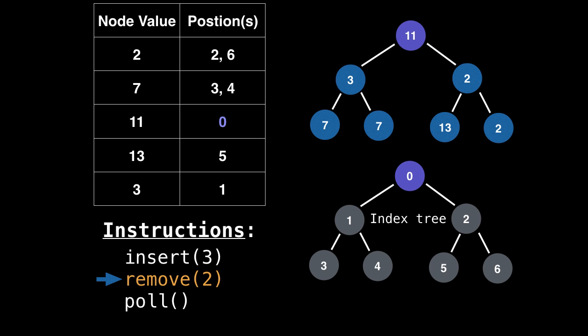So we look at 11's children, which happens to be three and two, two is smaller. So it's the one we're going to swap with. So swap it in the table and in the tree. Now, we are still not in satisfaction of the heap invariant. So look at 11's children being 13 and two, two is smaller, so swap it with two. And that's it, we're done.